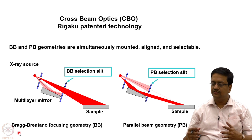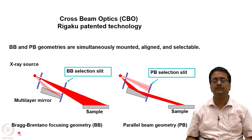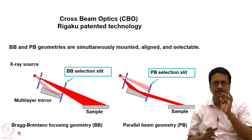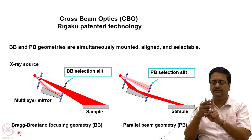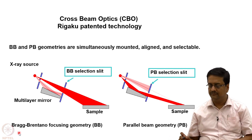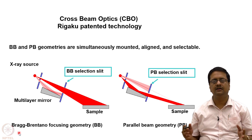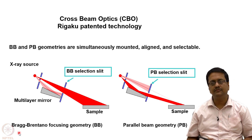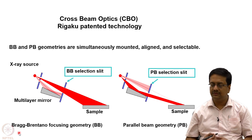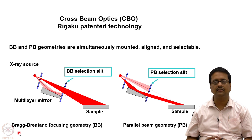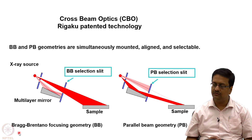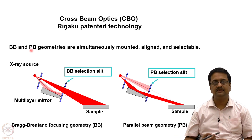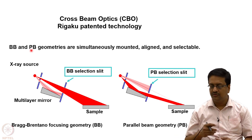For powder diffraction, we use a line focus beam rather than a circular focus beam, where the line falls on the sample. The beam can be divergent or parallel. This schematic shows the cross beam optics, a patented technology by Rigaku Corporation — now Rigaku Oxford Diffraction. The Bragg-Brentano (BB) and parallel beam (PB) geometries are simultaneously mounted, aligned, and selectable by a change of slit.